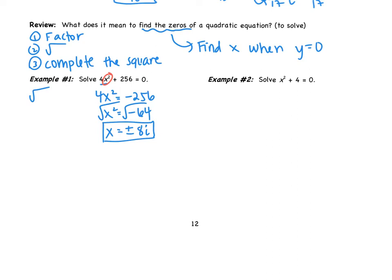So like in example two, we're going to get two solutions, maybe real, maybe imaginary. We're going to start this one the same way: get the x squared alone.